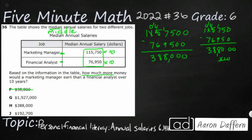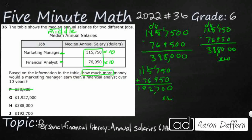Now, if you were unsure what 'how much more' means and added instead of subtracted, let's see what happens. Adding $115,750 and $76,950 gives us $192,700 — and if you didn't multiply by 10, that's where one incorrect answer comes from; multiply by 10 and you get another. Answer choices G and J are the same except for that extra zero — they come from addition rather than subtraction. But our correct answer is H: $388,000.